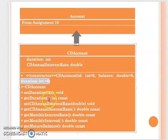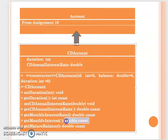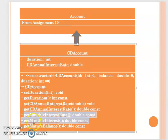The class provides set duration and get duration methods. The set CD annual interest rate is actually a private member function that will be called within the constructor function. You can then retrieve the CD annual interest rate using a getter. The monthly interest rate and monthly interest will also change accordingly, since the monthly interest rate is derived from the CD annual interest rate.